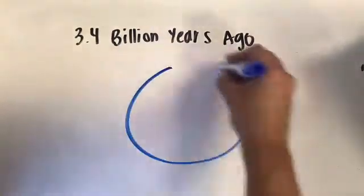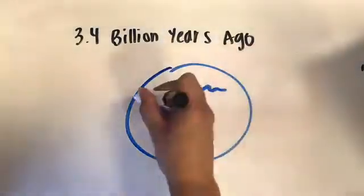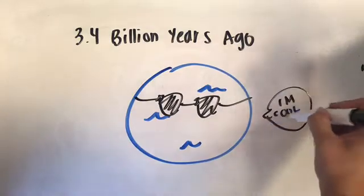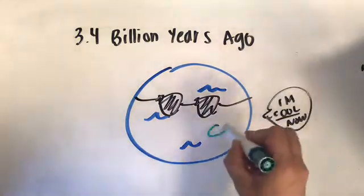Fast forward to around 3.4 billion years ago. The Earth has finally cooled off and has some liquid water on its surface. Around 2.7 billion years ago, the first photosynthetic bacteria arrived.